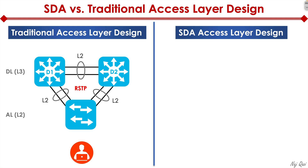In this design we'll have spanning tree — most likely Rapid Spanning Tree, which is the default on Cisco switches. Spanning tree goes through an election process, and once a root is selected it then goes through the process of blocking certain ports. As you can see here, we've lost half the capacity — literally one leg going up to distribution one is non-functional, because that's what Rapid Spanning Tree does for us.